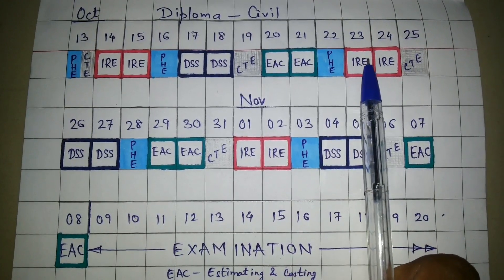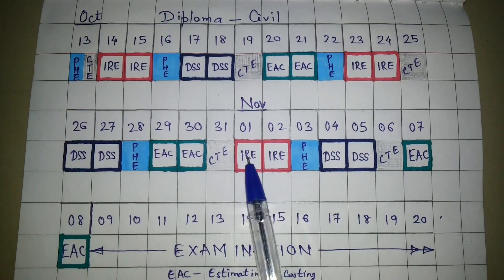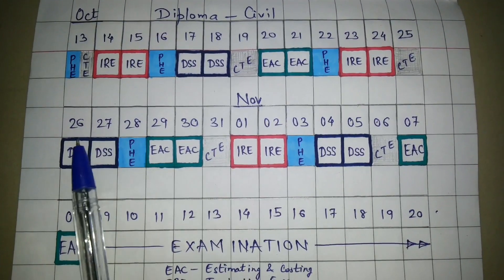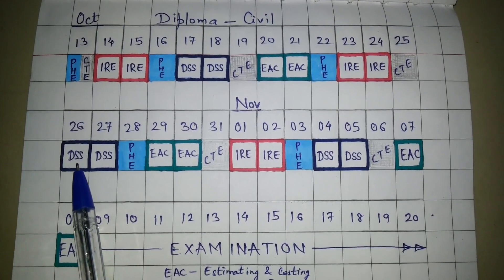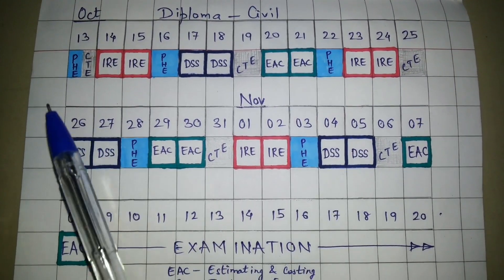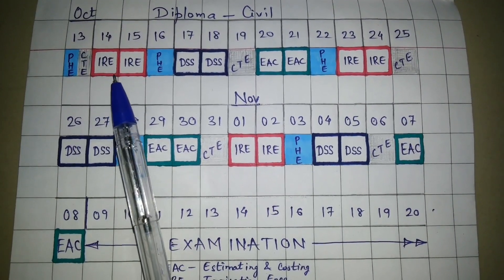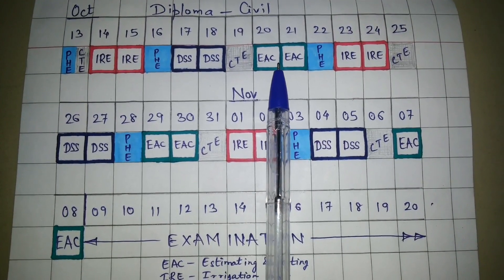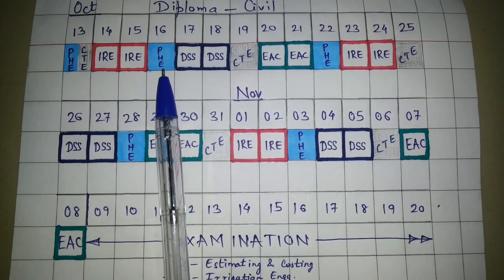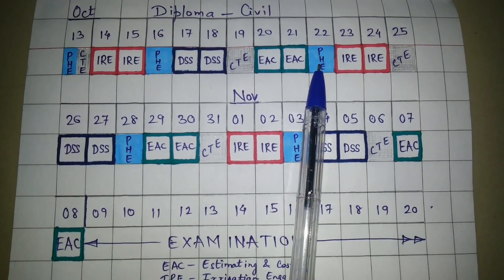For IRE, the 23rd and 24th can be used to continue from where you left off. Then stop and start again on the 1st and 2nd. For DSS, use the 17th and 18th, then continue on the 26th and 27th, and again on the 4th and 5th. The schedule goes: 13th — PHE and CTE, 14th — IRE, 15th — IRE, 16th — PHE, 17th — DSS, 18th — DSS, 19th — CTE, 20th — EAC, 21st — EAC, 22nd — PHE, 23rd — IRE.